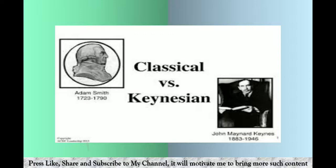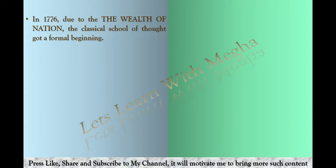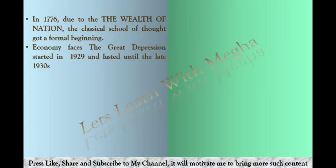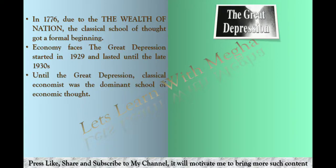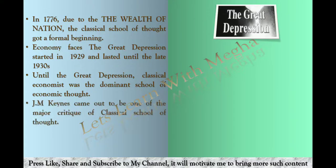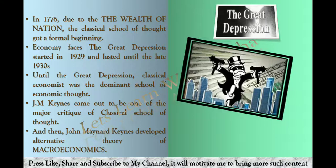Now let's talk about classical versus Keynesian economics. The Wealth of Nations gave the classical school of thought a formal beginning. The classical approach was followed in the overall economy when there was no great depression. But when the Great Depression started in 1929 and proved long-lasting, it was seen that the classical school of thought provided no solution. Then came J.M. Keynes, who became a major critic of classical school of thought, and he developed an alternative theory.